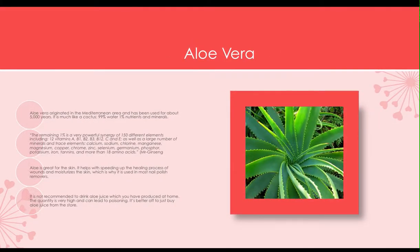Next is aloe vera. It's a succulent plant found in the Mediterranean. This plant moisturizes your skin, and most nail polish removers use this plant. Also, aloe juice is poisonous if you make it from home — I suggest you just buy it from the store because they remove all the toxins.